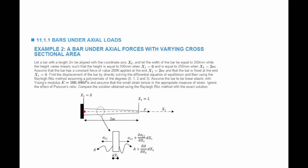The bar is fixed at the end where x1 equals 0. We need to find the displacement of the bar by directly solving the differential equation of equilibrium and then using the Rayleigh-Ritz method, assuming polynomials of degrees 1, 2, and 3. We want to try all these different polynomials to see what we get for an approximate solution.